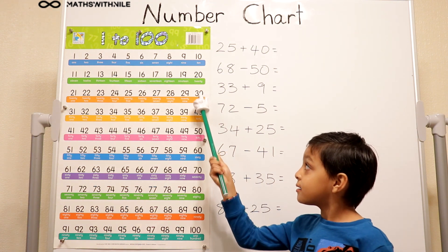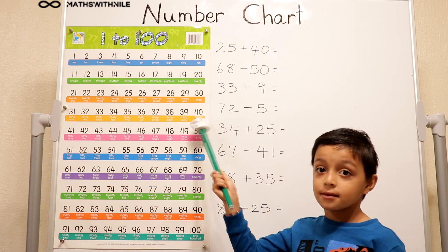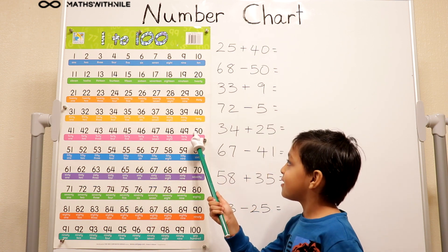What's 30 plus 10? 40. 40 plus 10. What's 40 plus 10? 50. Very good.